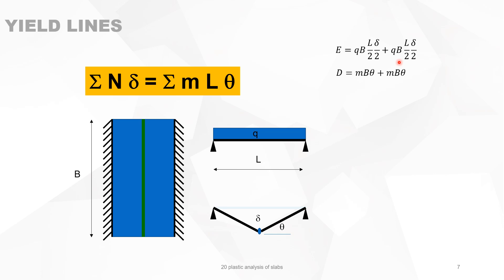The internal energy dissipated by rotation about the yield lines is the plastic bending moment M projected directly onto the rotation axis, giving length B, times the angle theta. This yield line is also projected to the rotation axis on the left side, giving again M times B times theta. The tangent of theta equals delta divided by L over 2, and for small angles expressed in radians, theta equals 2 delta over L.